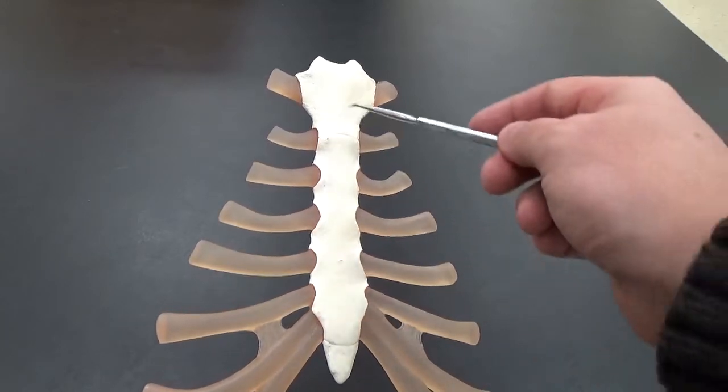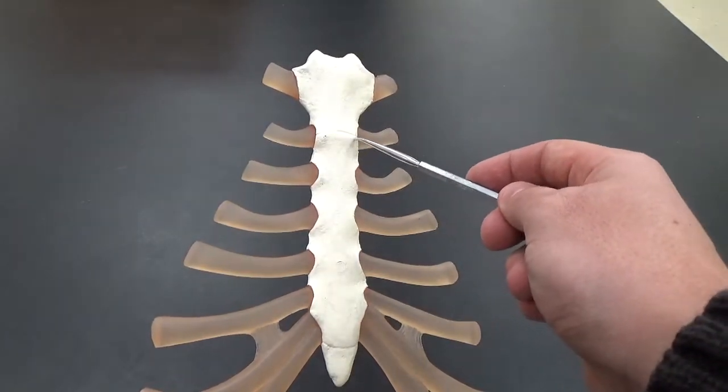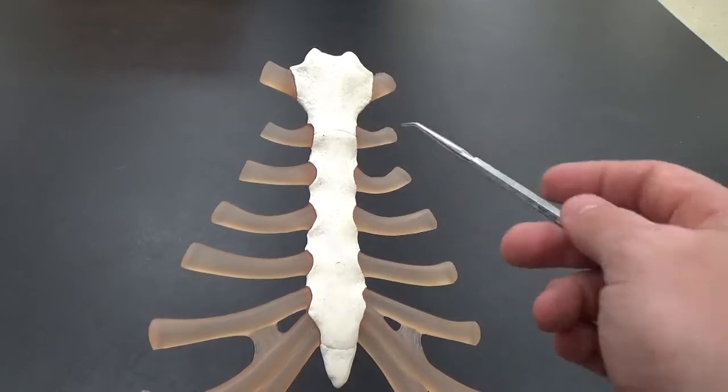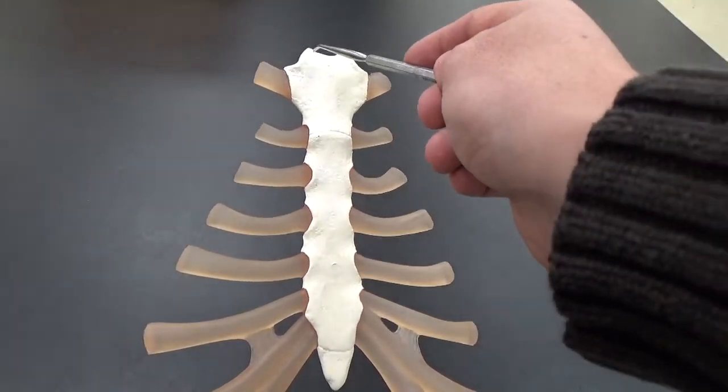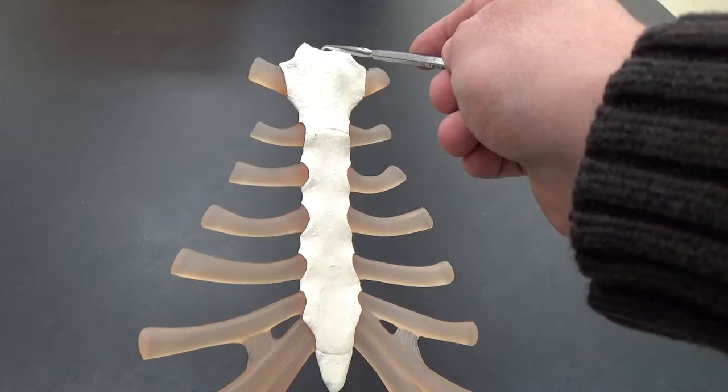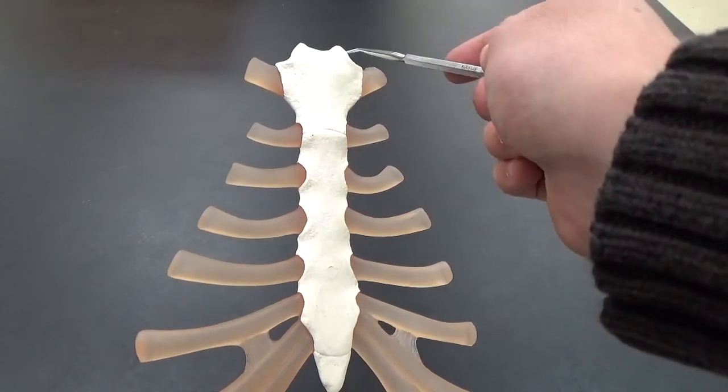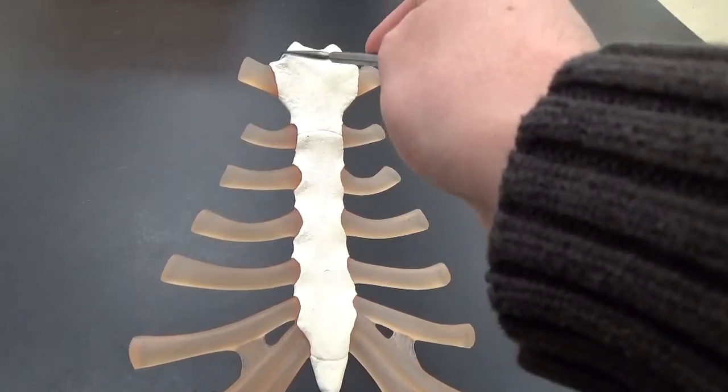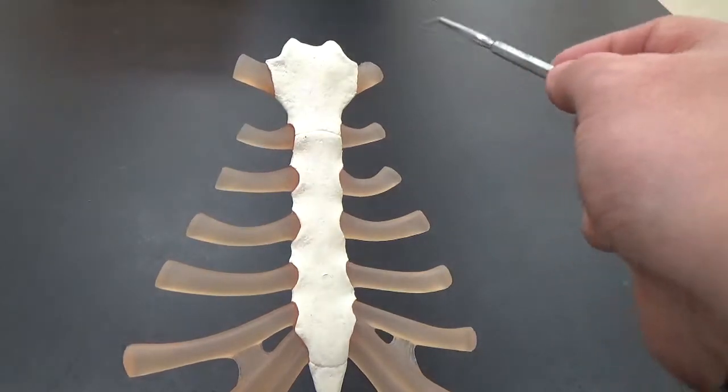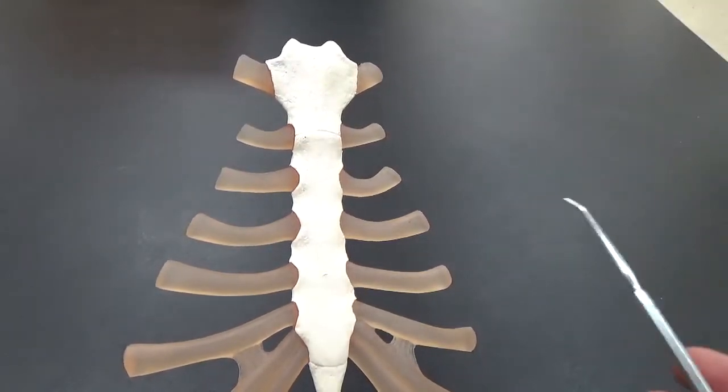The manubrium is separated from the body by the sternal angle. You have notches here at the top, so the one in the middle is our jugular notch, and then on either side are our clavicular notches. That's where the clavicle comes in and articulates with it.